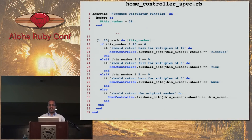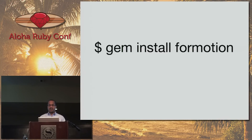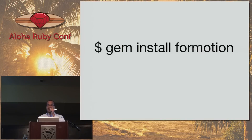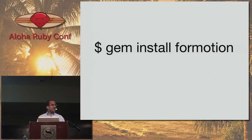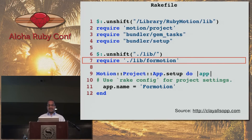There we go. Now there are some very cool gems you can use with RubyMotion. Just because you're compiling an app for iOS doesn't mean you can't use gems — you can. The gems you use are specifically designed for iOS. One such gem is Formotion, and what Formotion does is allow you to create forms that run on iOS.